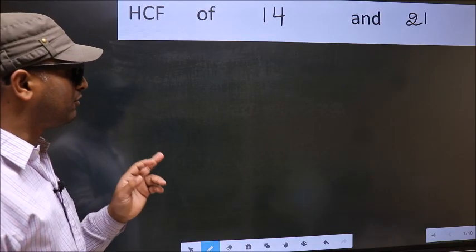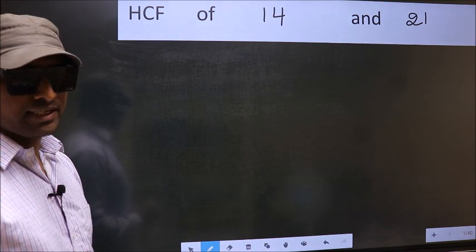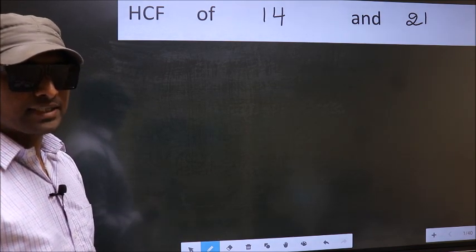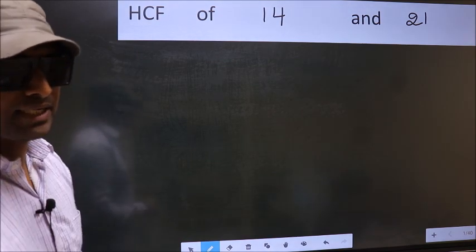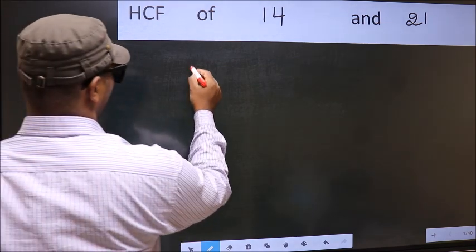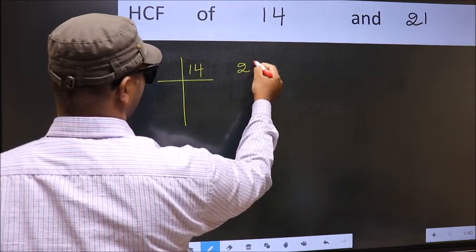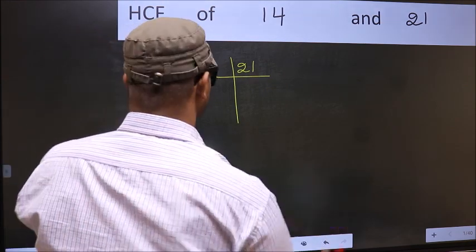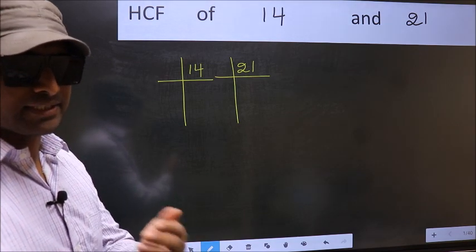HCF of 14 and 21. To find the HCF, we should do the prime factorization of each number separately. What I mean is 14 and 21. This is your step 1.